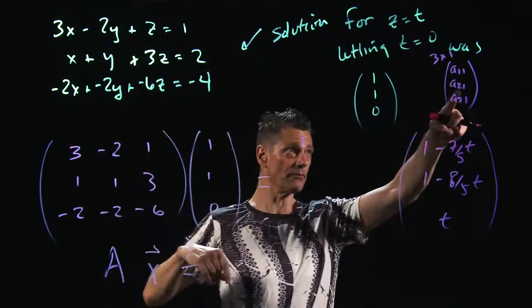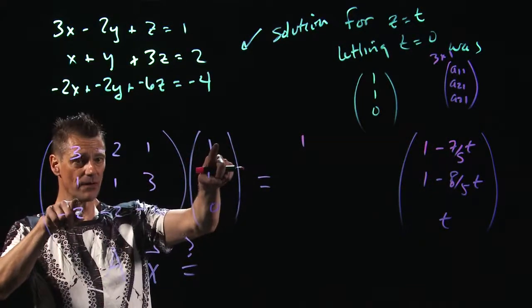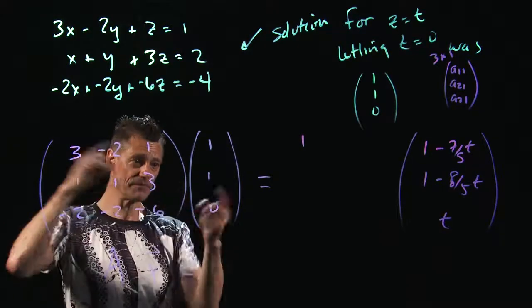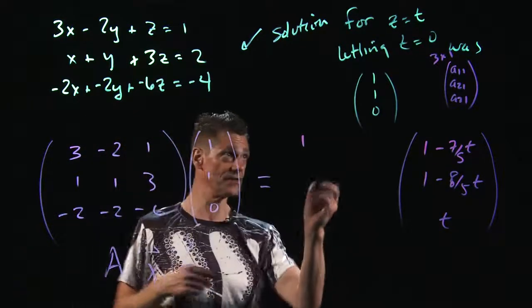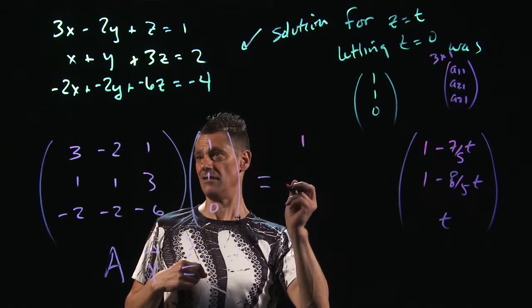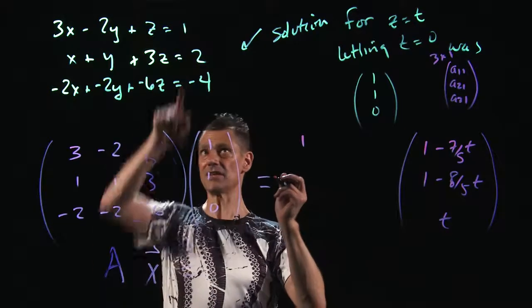Second row, first column. 1 times 1 is 1, plus 1 times 1 is 2. Plus 3 times 0 is 2 plus 0. This is 2. And it does equal 2.